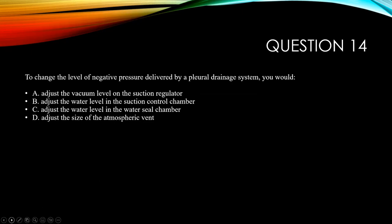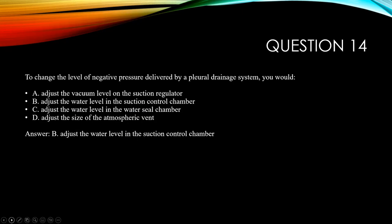Question fourteen: to change the level of negative pressure delivered by a pleural drainage system, you would A, adjust the vacuum pressure on the suction regulator; B, adjust the water level in the suction chamber; C, adjust the water level in the water seal chamber; or D, adjust the size of the atmosphere vent. The correct answer is B: adjust the water level in the suction control chamber. The wall pressure does not control the level of suction — it is the water level in the suction control chamber that determines negative pressure delivered.